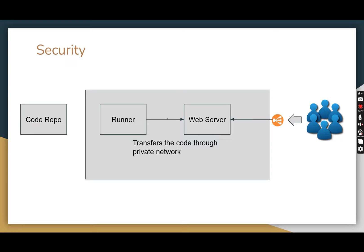These communications are configured in the security group. On the web server, we enable traffic from the load balancer and from the runner. On the runner, we configure outbound traffic only to the web server — no inbound traffic. You also need to configure outbound traffic to communicate with GitLab. The runner-to-web-server communication uses the private IP. Technically, using the public IP would also work, but I would recommend the private IP so that the transfer is secure.